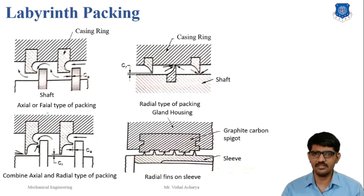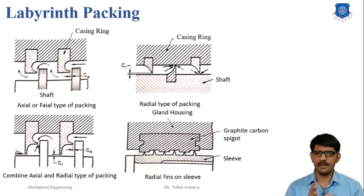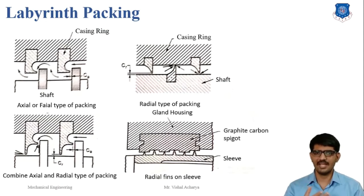When excess steam needs to drain out due to condensation caused by cooling, a labyrinth arrangement is also provided. The labyrinth arrangement is also known as the labyrinth steam seal. The common structure is the comb-type and fir-tree structure. The first type of packing is the axial or facial type, where non-ferrous metals are curled into the gland casing and the leakage is controlled by the axial clearance. This type of packing is usually used at the end of the high pressure turbine.